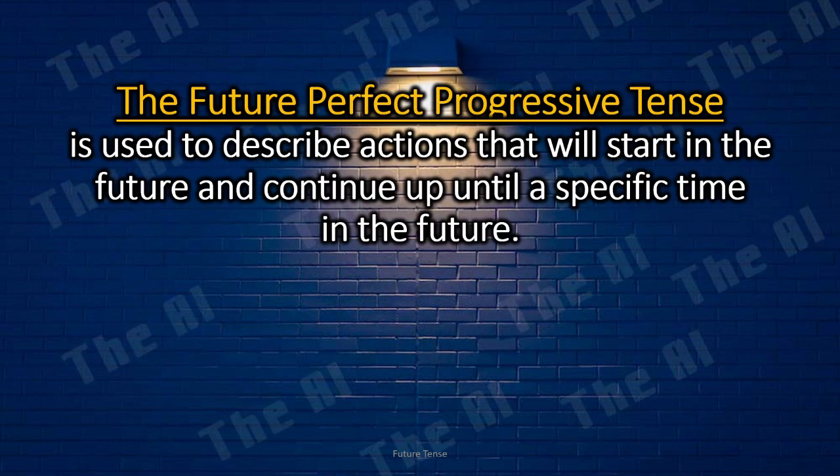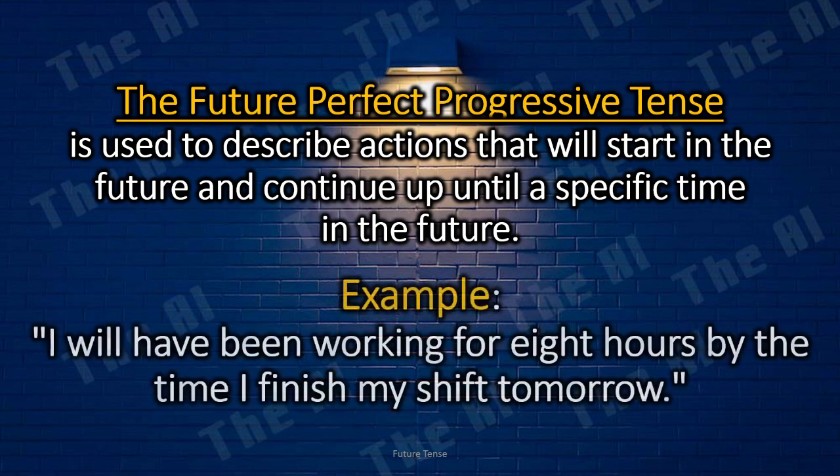The future perfect progressive tense is used to describe actions that will start in the future and continue up until a specific time in the future. For example, 'I will have been working for 8 hours by the time I finish my shift tomorrow.'